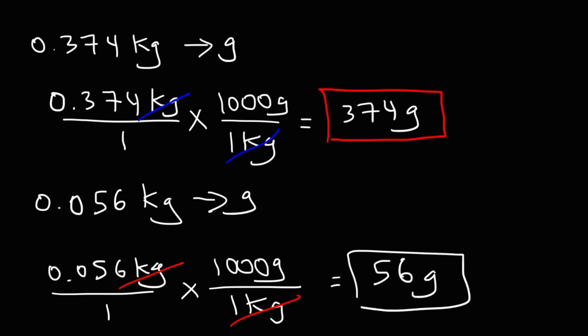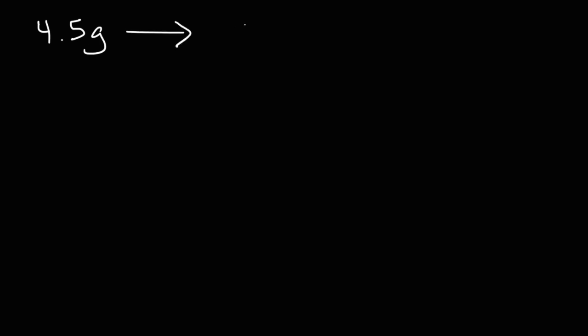Now you know how to convert from kilograms to grams. Let's work backwards and convert grams to kilograms. So let's say we have 4.5 grams — how many kilograms is that? Keep in mind, 1 kilogram is 1,000 grams. When you want to go from grams to kilograms, you need to divide. Let's set it up first.